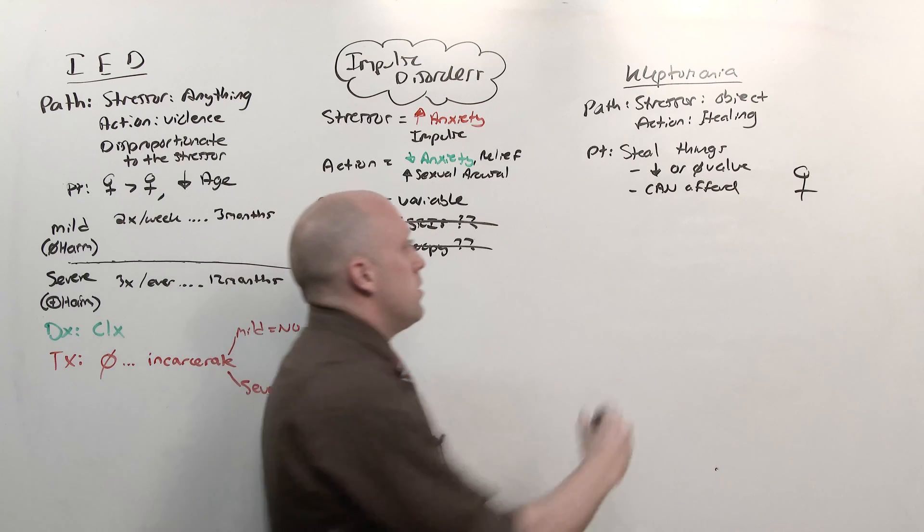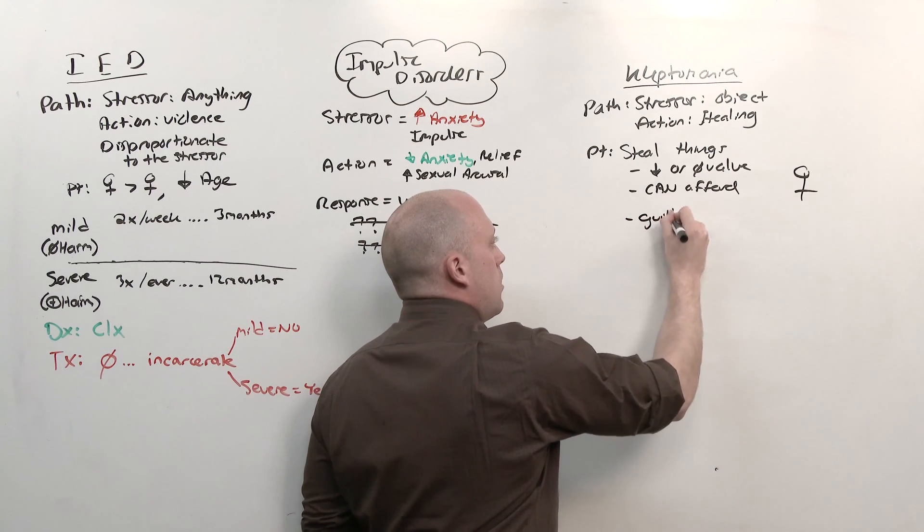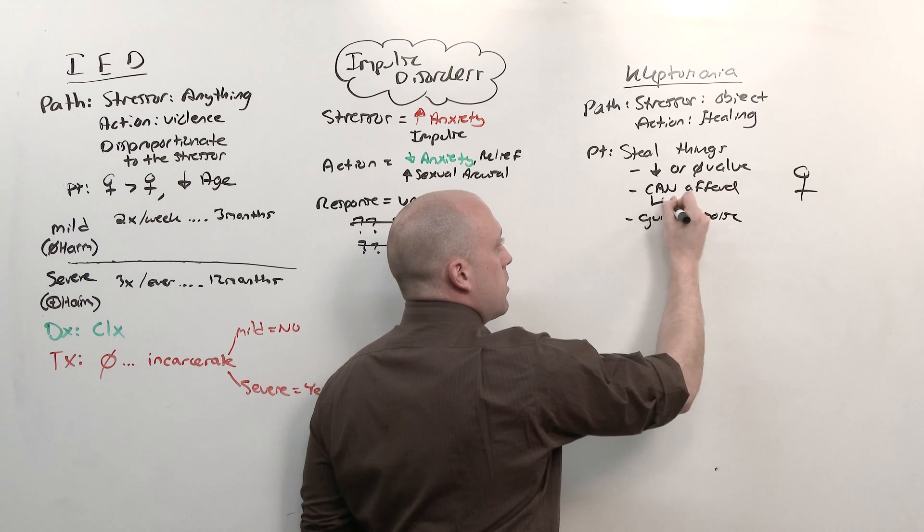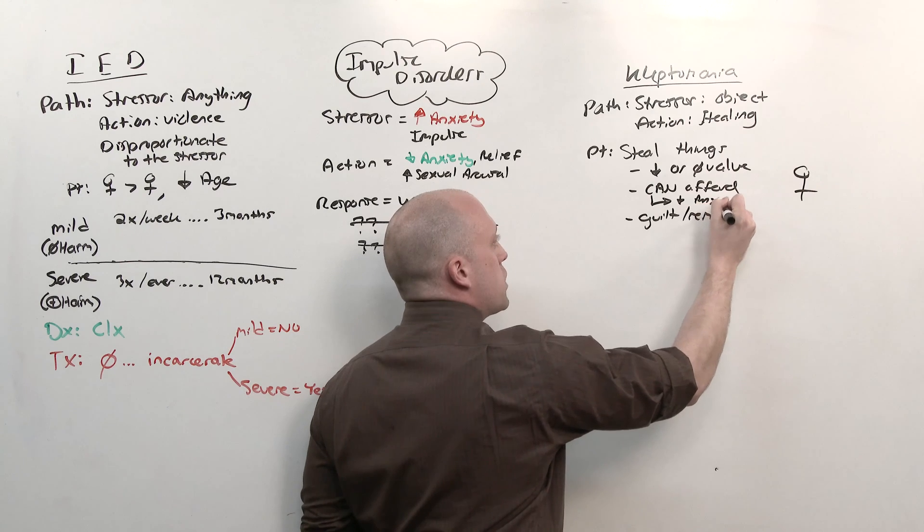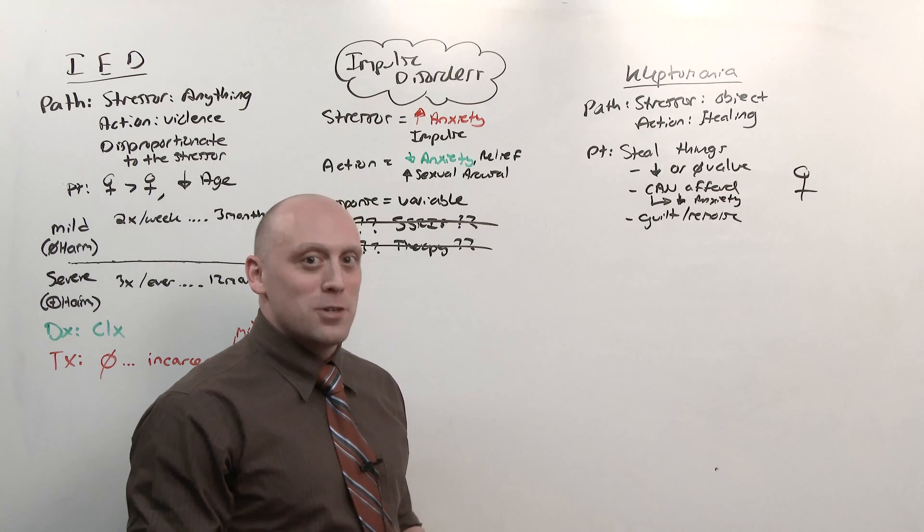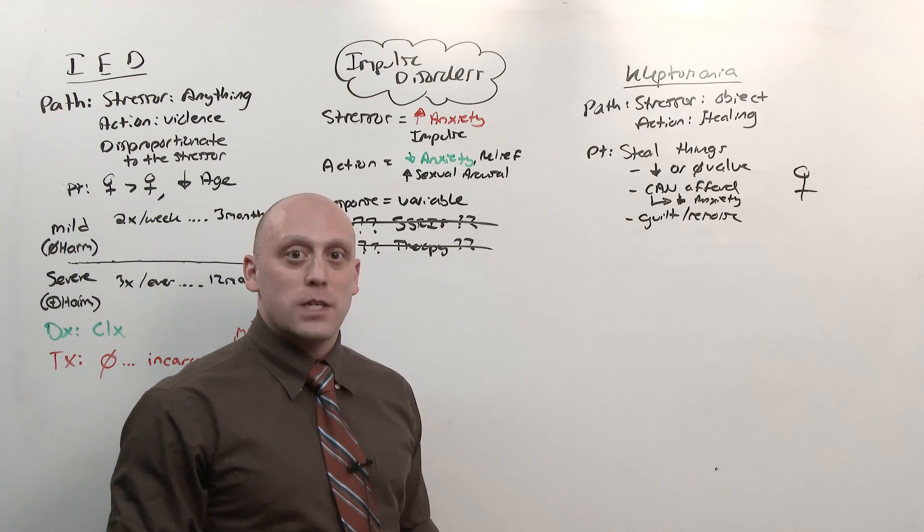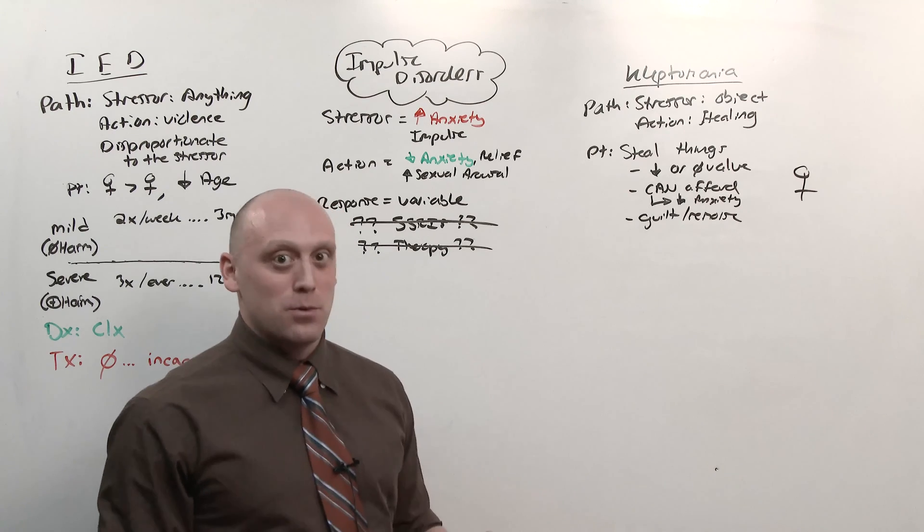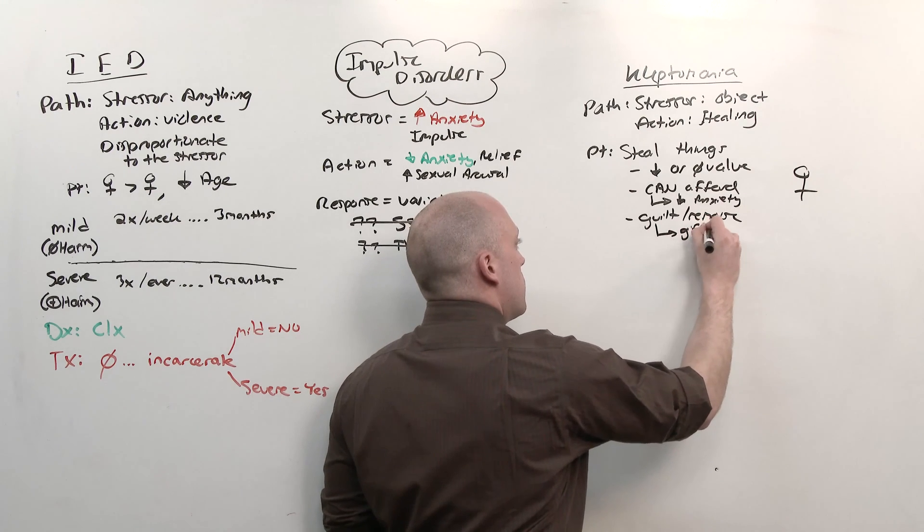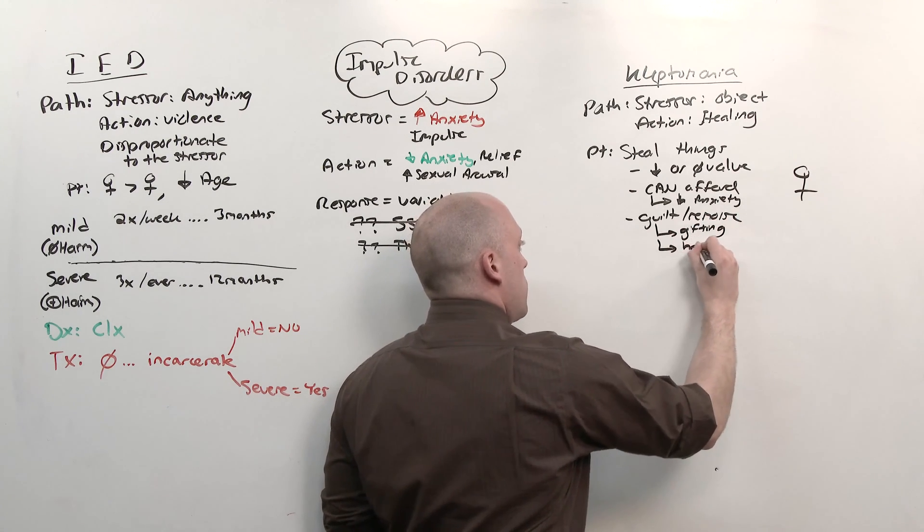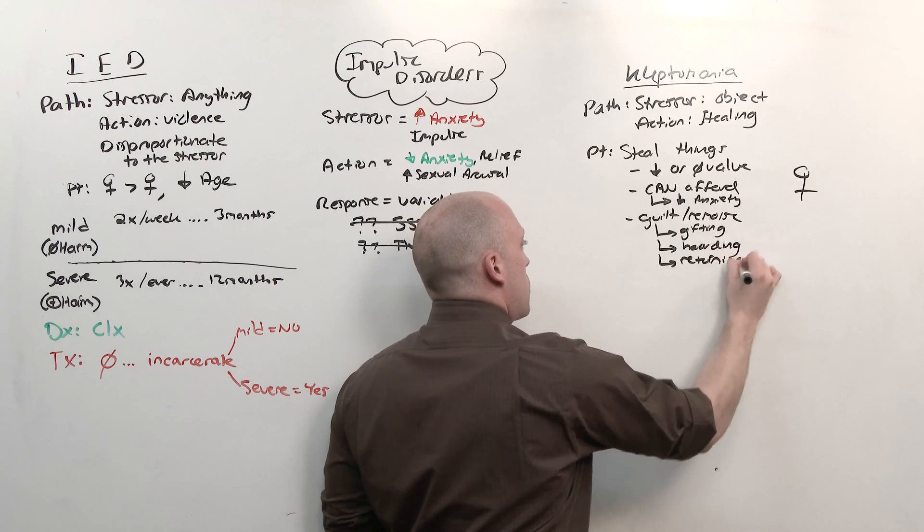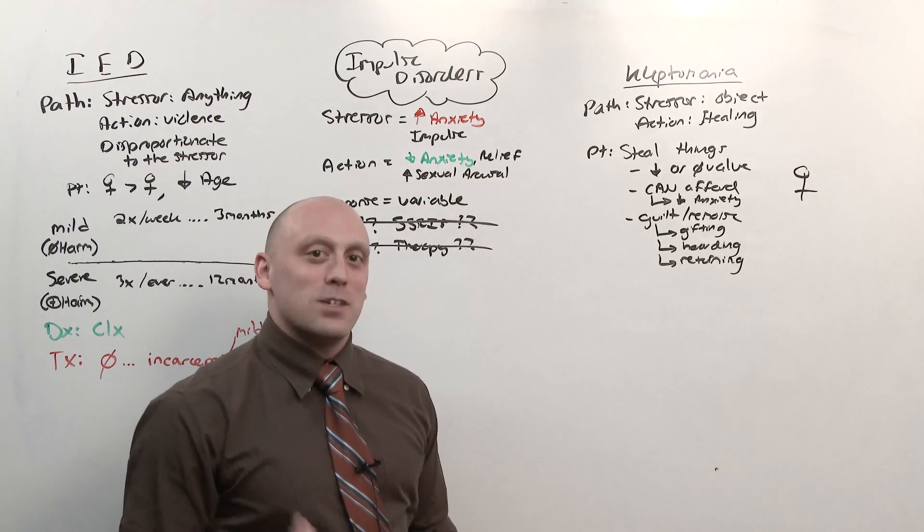Afterwards, the reaction is guilt or remorse. Here's the thing, though. The theft itself caused to reduce anxiety. That's why she stole in the first place. She stole the thing because the theft at that exact moment reduced anxiety. But oftentimes, these women are faced with remorse and guilt. They didn't want to steal. They had to. And so what you'll see from that guilt and remorse is either gifting, giving it to someone else, hoarding, that is, they hide it away never to use it again, or simply returning it. And interestingly, if you return it, for whatever reason, in kleptomania, the anxiety doesn't return.